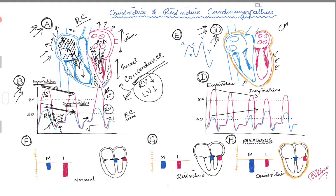In constrictive cardiomyopathy, the story is totally different. When a person inspires, increased intrathoracic pressure causes increased venous return, which causes filling of the atria and more blood going into the right ventricle. If you look at picture D and picture A, the atria are not huge in constrictive cardiomyopathy.